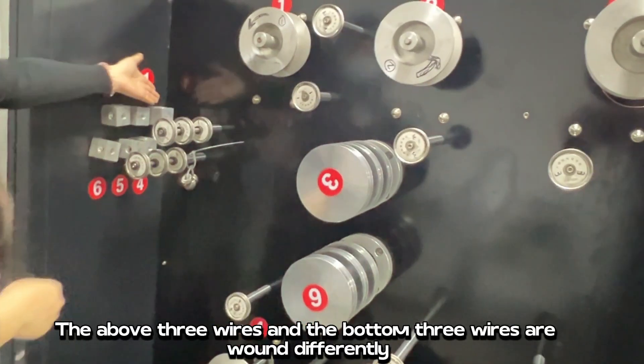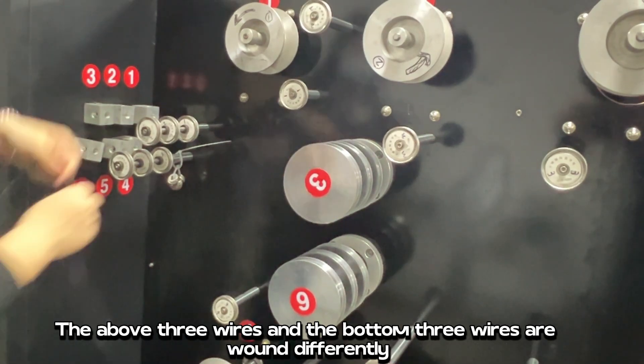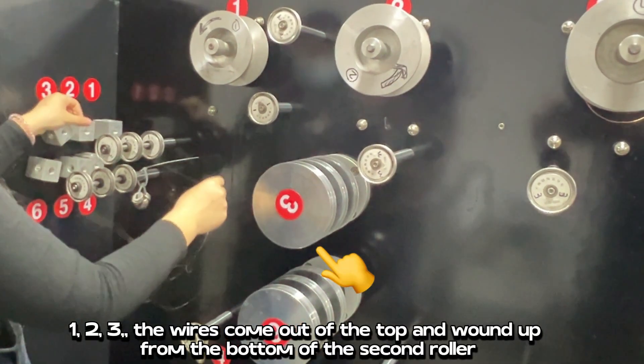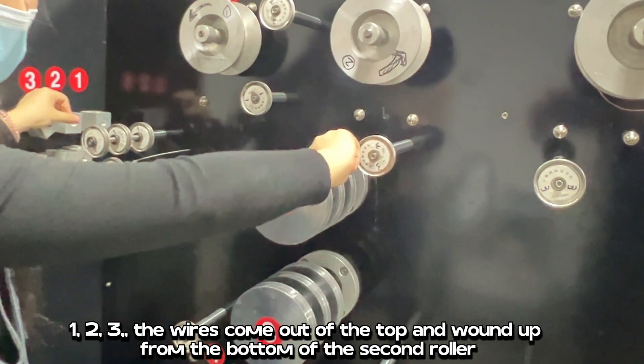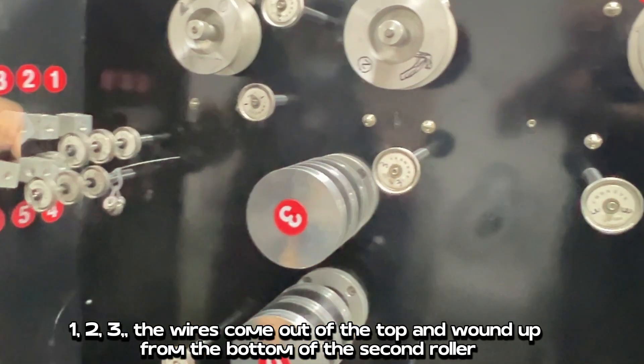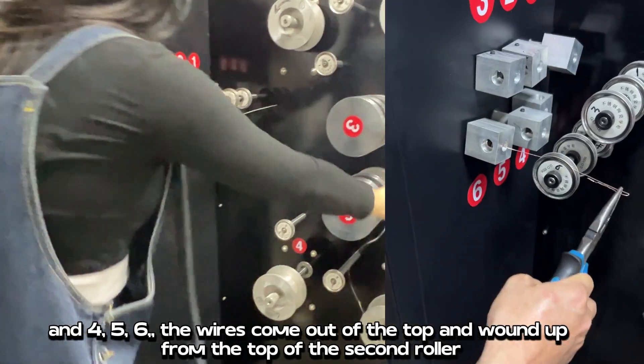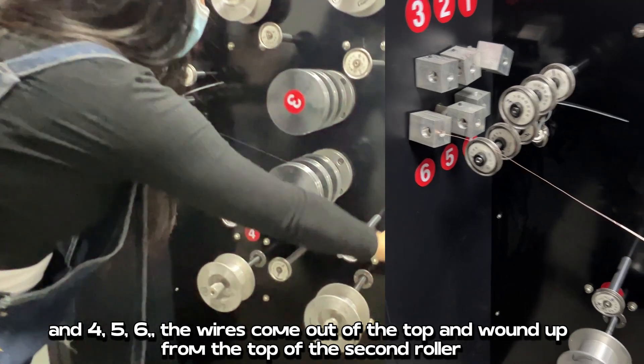The above 3 wires and the bottom 3 wires are wound differently. 1, 2, 3, the wires come out of the top and wound up from the bottom of the second roller. And 4, 5, 6, the wires come out of the top and wound up from the top of the second roller.